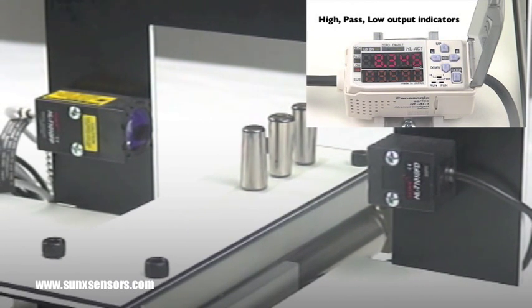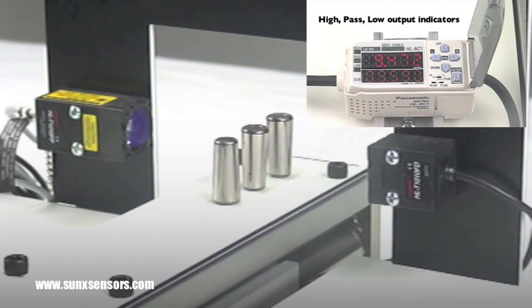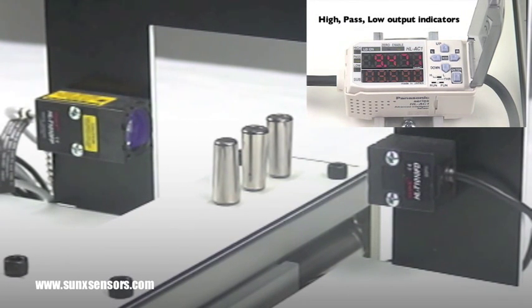The third bearing, furthest from the camera, is also right-side up, but it is too large of a diameter and fails the inspection.